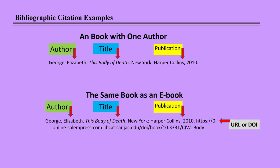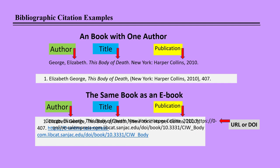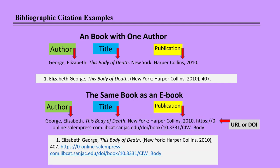Here's a simple book bibliographic citation: author, title, publication information, date. From the footnote, we switched the author's name around, changed the commas to periods, and took out the parentheses around the publication information. The ebook follows pretty much the same alterations: switch the author's name around, change the commas to periods, and take out the parentheses.